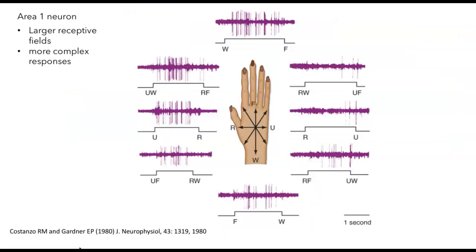I want to give you a little bit of an example of what some of the cells in areas 1 and 2 look like. What are their receptive fields? Just remember that in general, these higher regions in the somatosensory cortex, area 1 and area 2, they have larger receptive fields than in 3a or 3b, and they're going to give more complex responses.